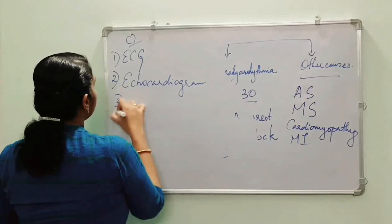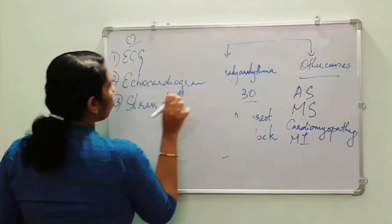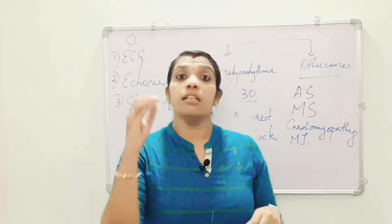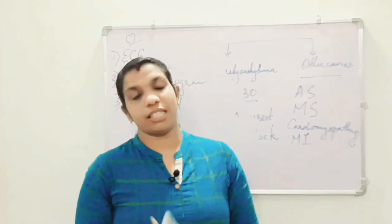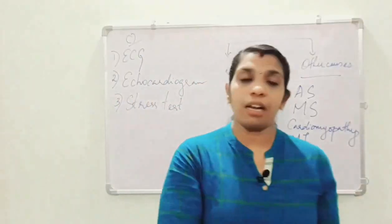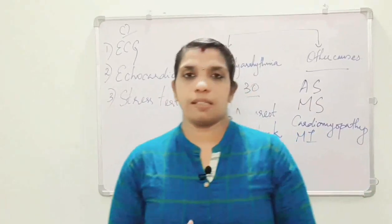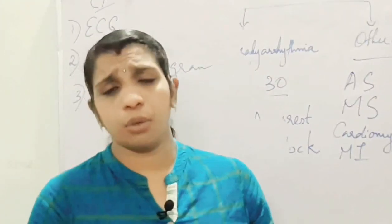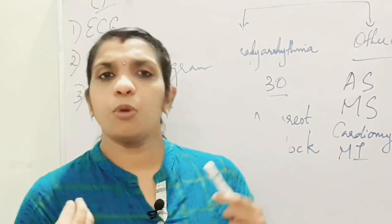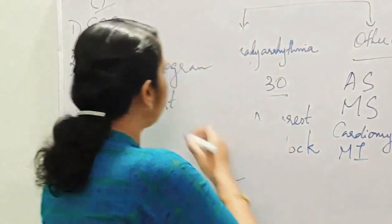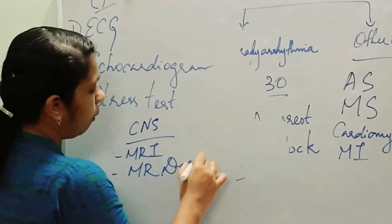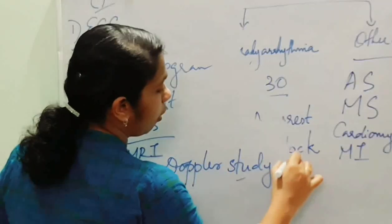For cardiovascular investigation, the key tests are ECG, echocardiogram, and stress test. If nervous system involvement is suspected, perform a central nervous system examination along with MRI and also peripheral neuropathy tests.